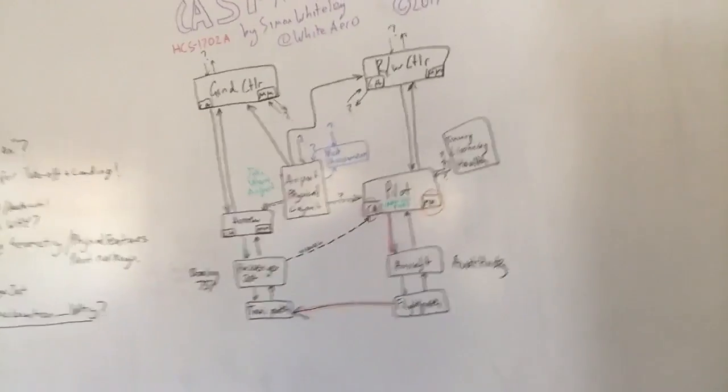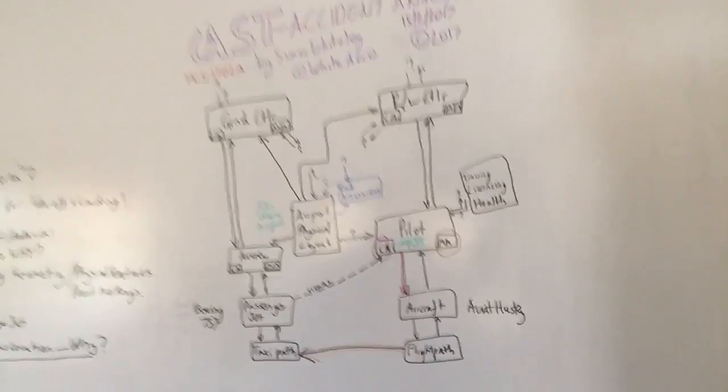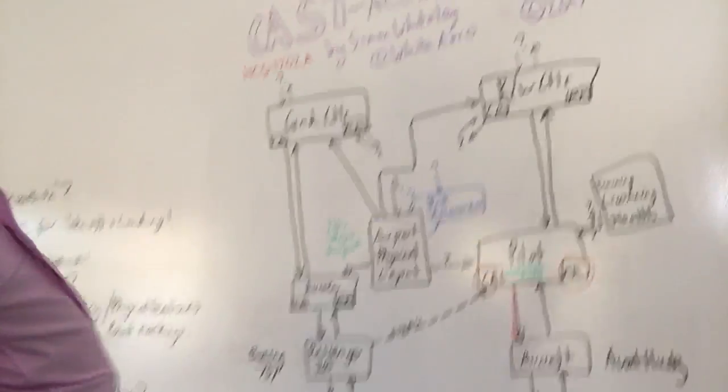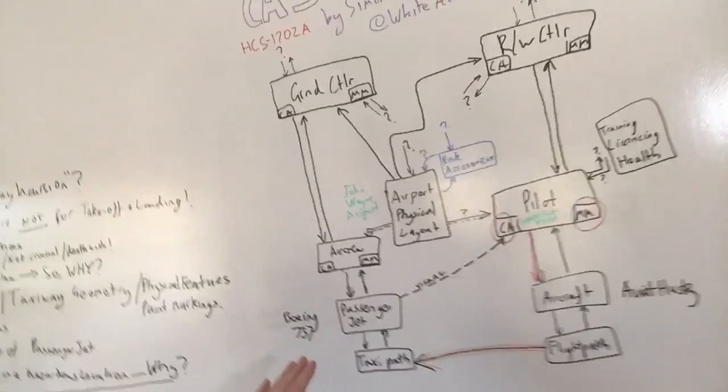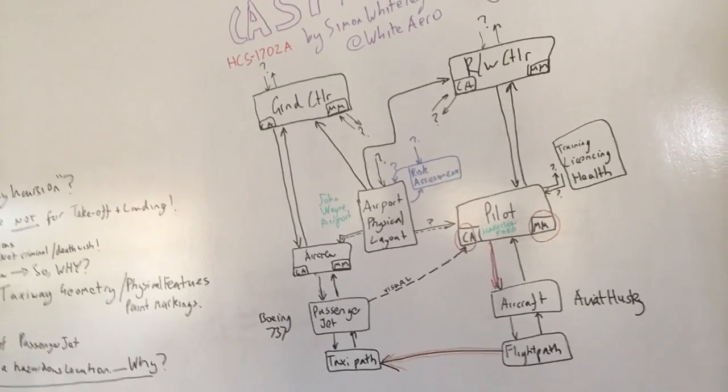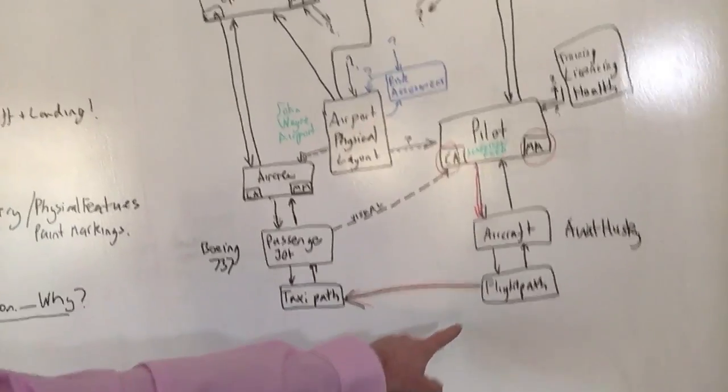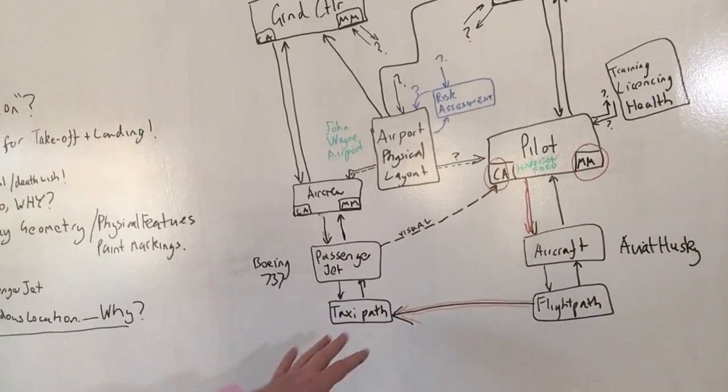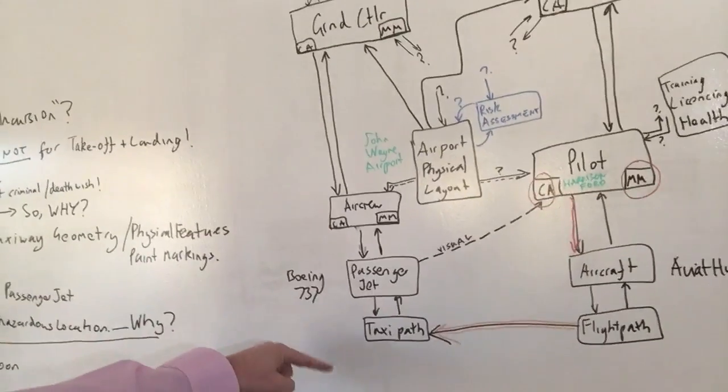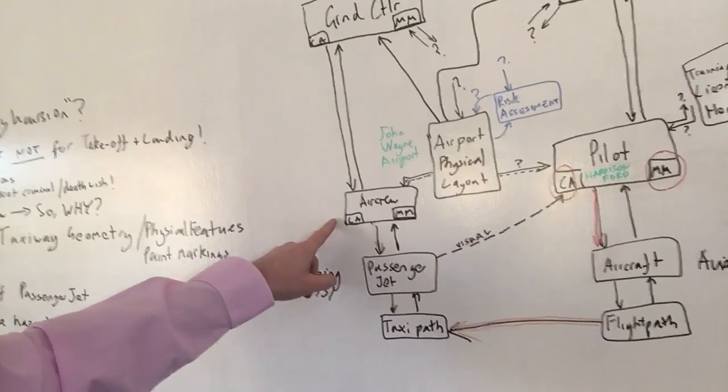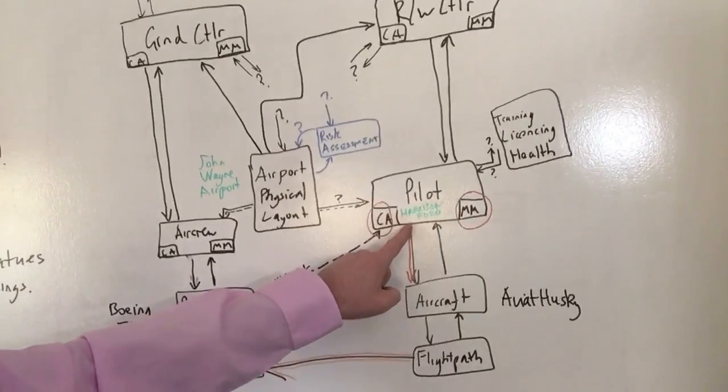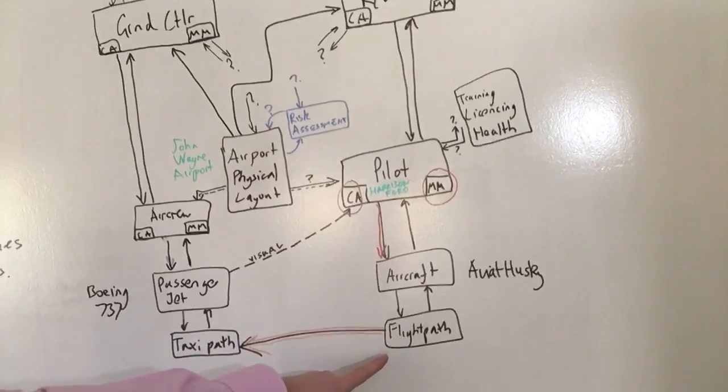So as you can see, this is the overall control structure that I've drawn. So on the top left-hand side there, I've got the ground controller, top right-hand side, I've got the runway controller. Now I've presumed that that's the configuration of the airport ATC on the day. It might be different. More information should come out as the news and incident reporters get involved. But essentially the physical process that this control structure is intended to control is the flight path, the taxiway path of these two aircraft. So this aircraft is the 737 passenger jet under the control of some air crew that's under the control of the taxi and movement of the aircraft. And then of course there's the pilot, Harrison Ford, who's in control of his aircraft and the flight path that aircraft had.